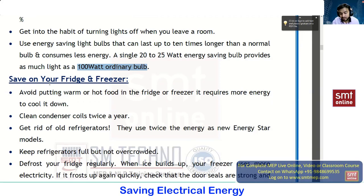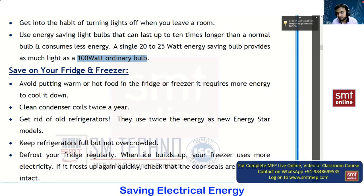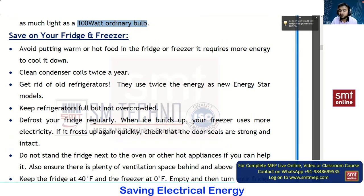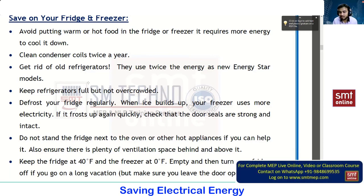To save on your fridge or freezer: avoid putting warm or hot food into the fridge. Bring the container down to room temperature first, then keep it in the refrigerator. Always clean your condenser coil at least every six months. If you are using an old refrigerator, it is recommended to replace it, because it will consume double the electrical energy for the same capacity. Also go with the same capacity — never overload the refrigerator, because the thermostat will not turn off your compressor, causing it to consume the same amount of electrical energy continuously.